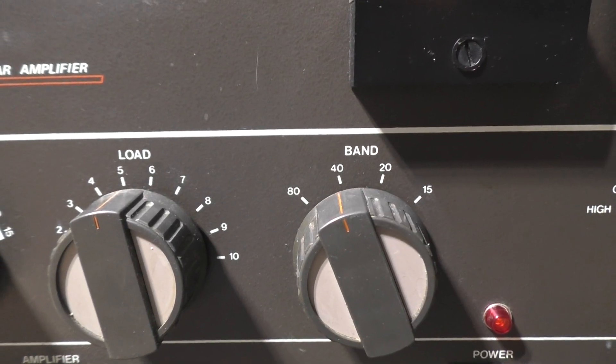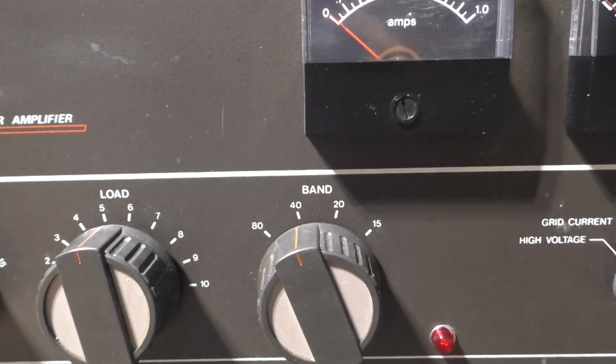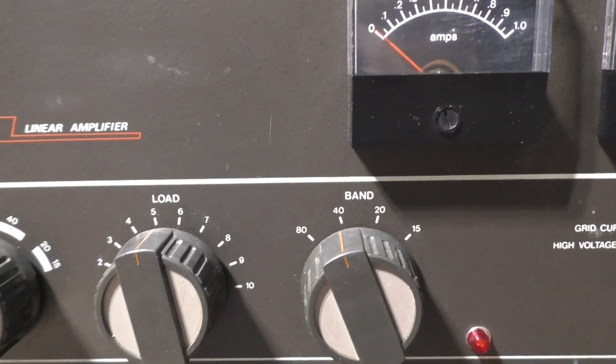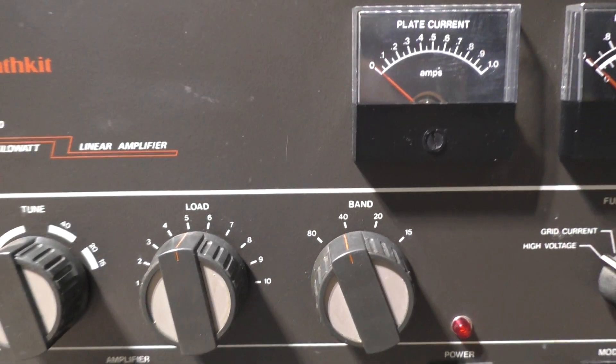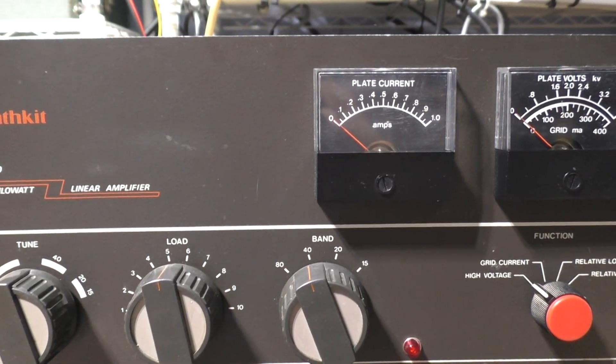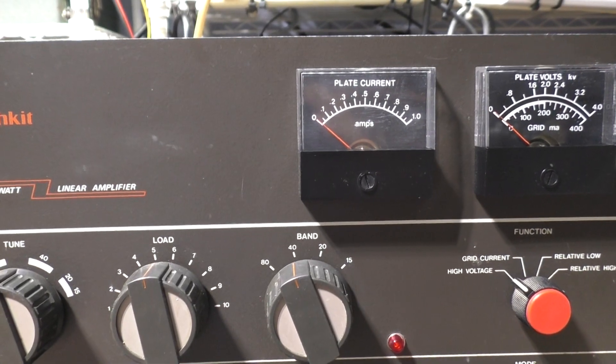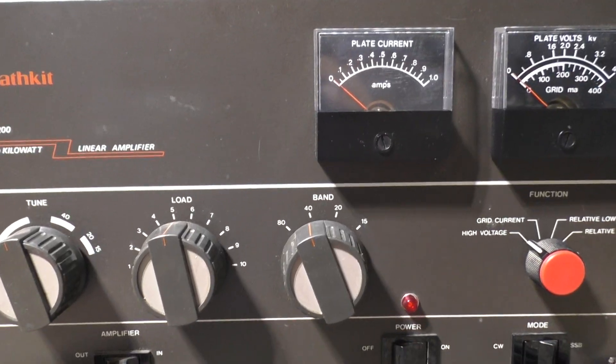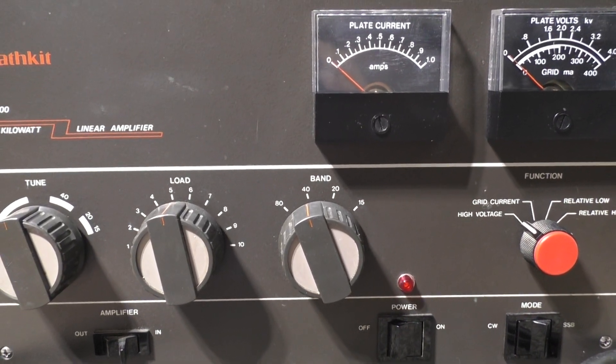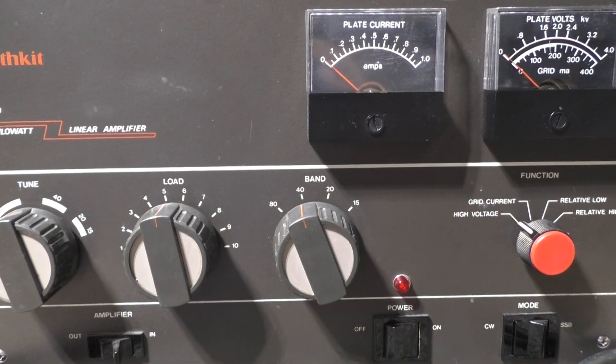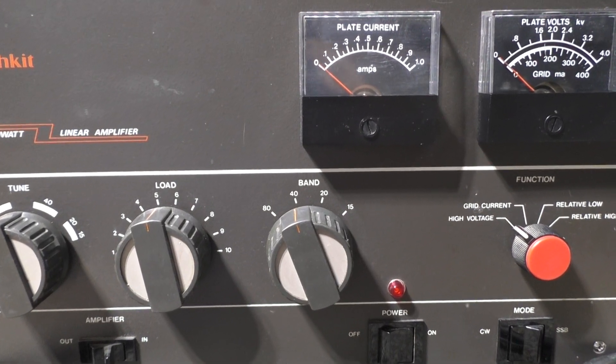It also had an input filter they called it. The filter was kind of a secret, but all the filter was was a 10-11 meter notch filter. It took out 10-11 meters coming into the amp, so if you tried to drive the amp on 10 meters or 11 meters, it would notch out your drive.